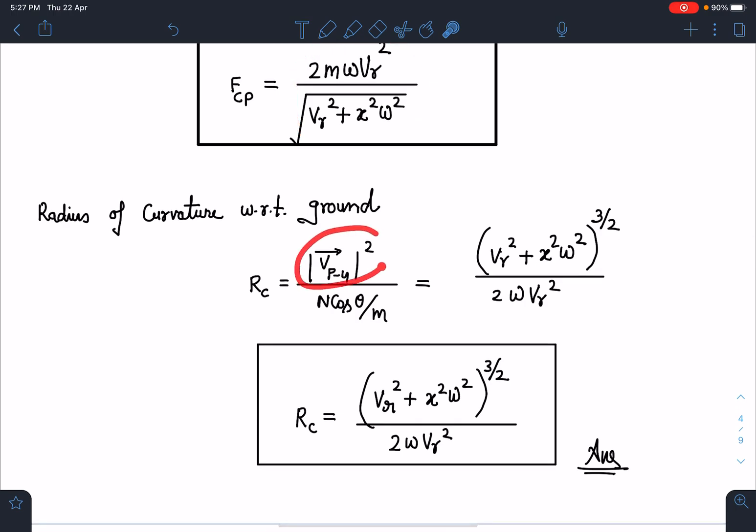Now what I am going to do is this value is going to be vr square plus x square omega square and if I substitute the value of N cos theta from this expression, this is going to be vr square plus x square omega square to the power 3/2 divided by 2 omega vr square. This is going to be the radius of curvature with respect to ground. This is going to be the final answer.